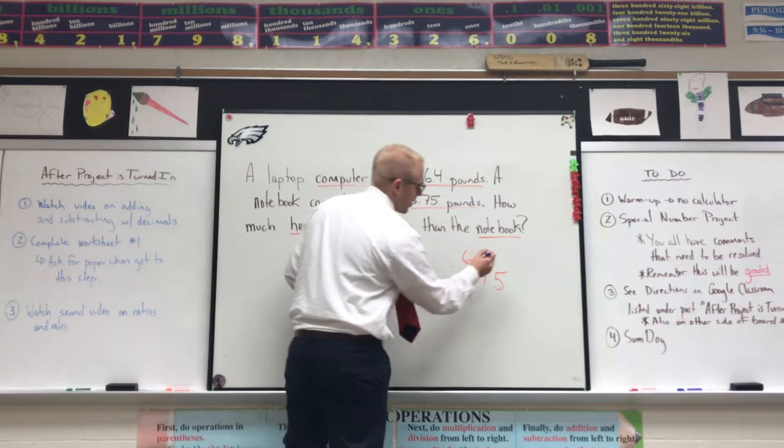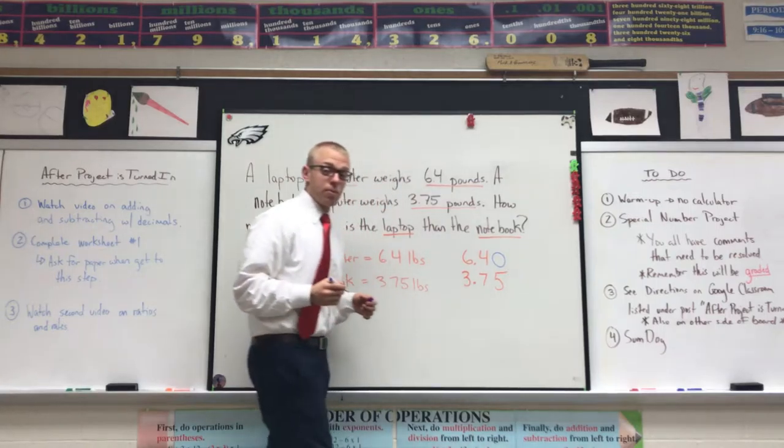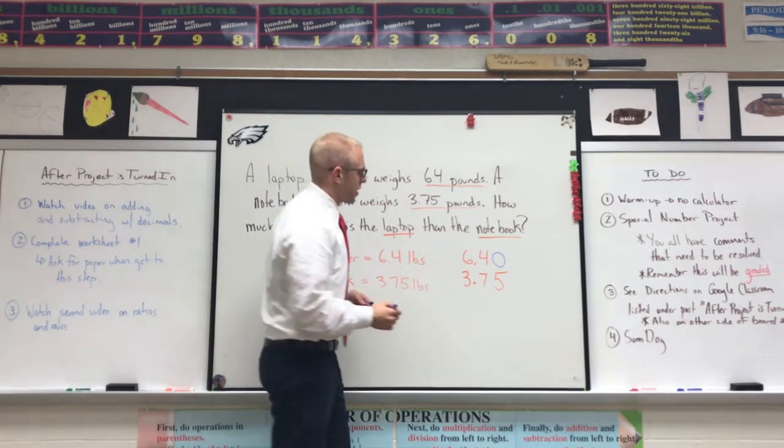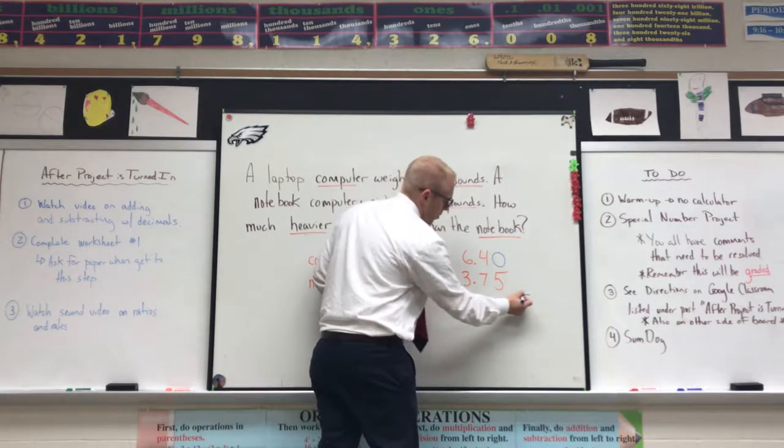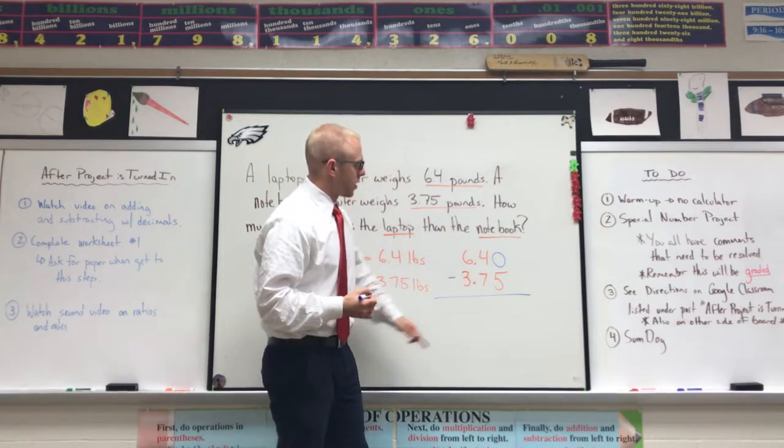Gonna grab that other color marker. Know that placeholders are important. Now I'm ready to subtract—subtraction symbol, there's my line across. Zero over five—you know we need to do, we need to borrow. That four is going to become a three.